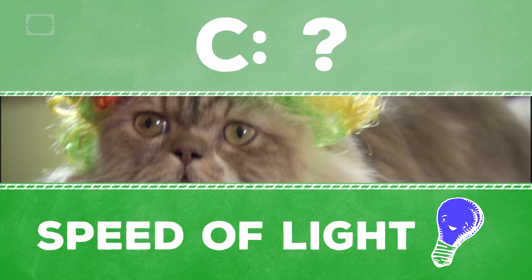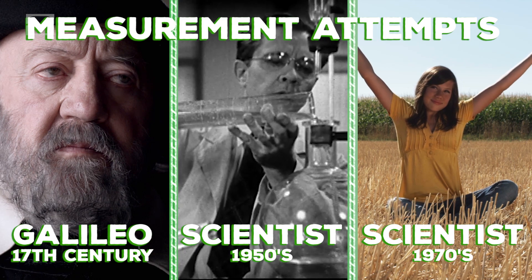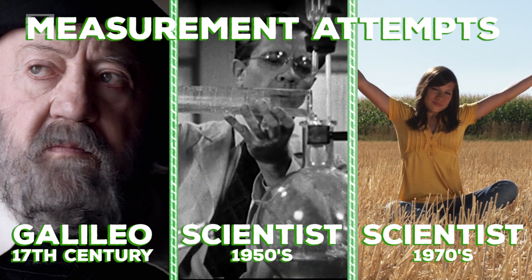We used to think the speed of light was instantaneous, but that's not the case. For centuries, scientists tried to figure out the exact speed of light, starting with Galileo in the 17th century.